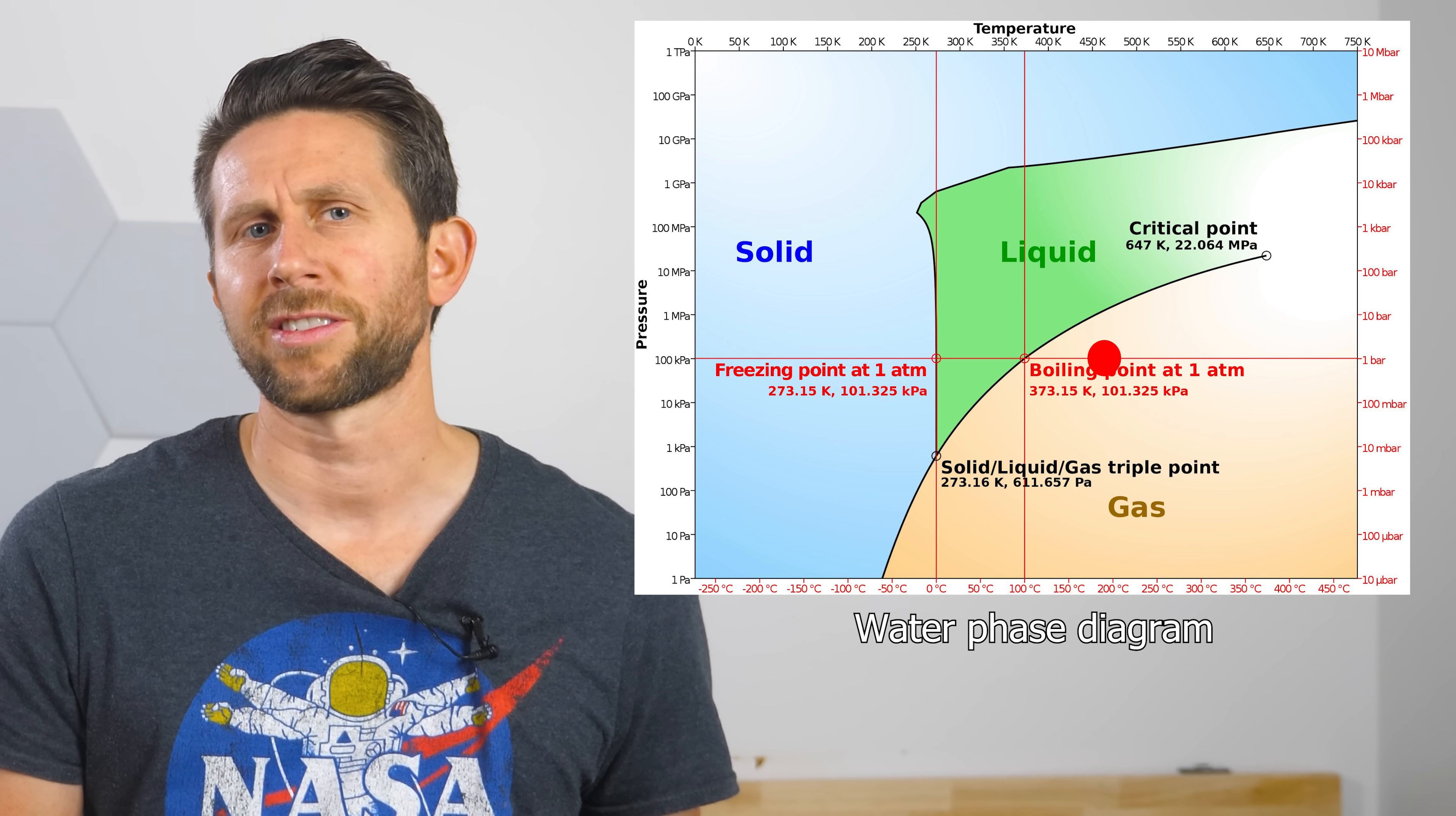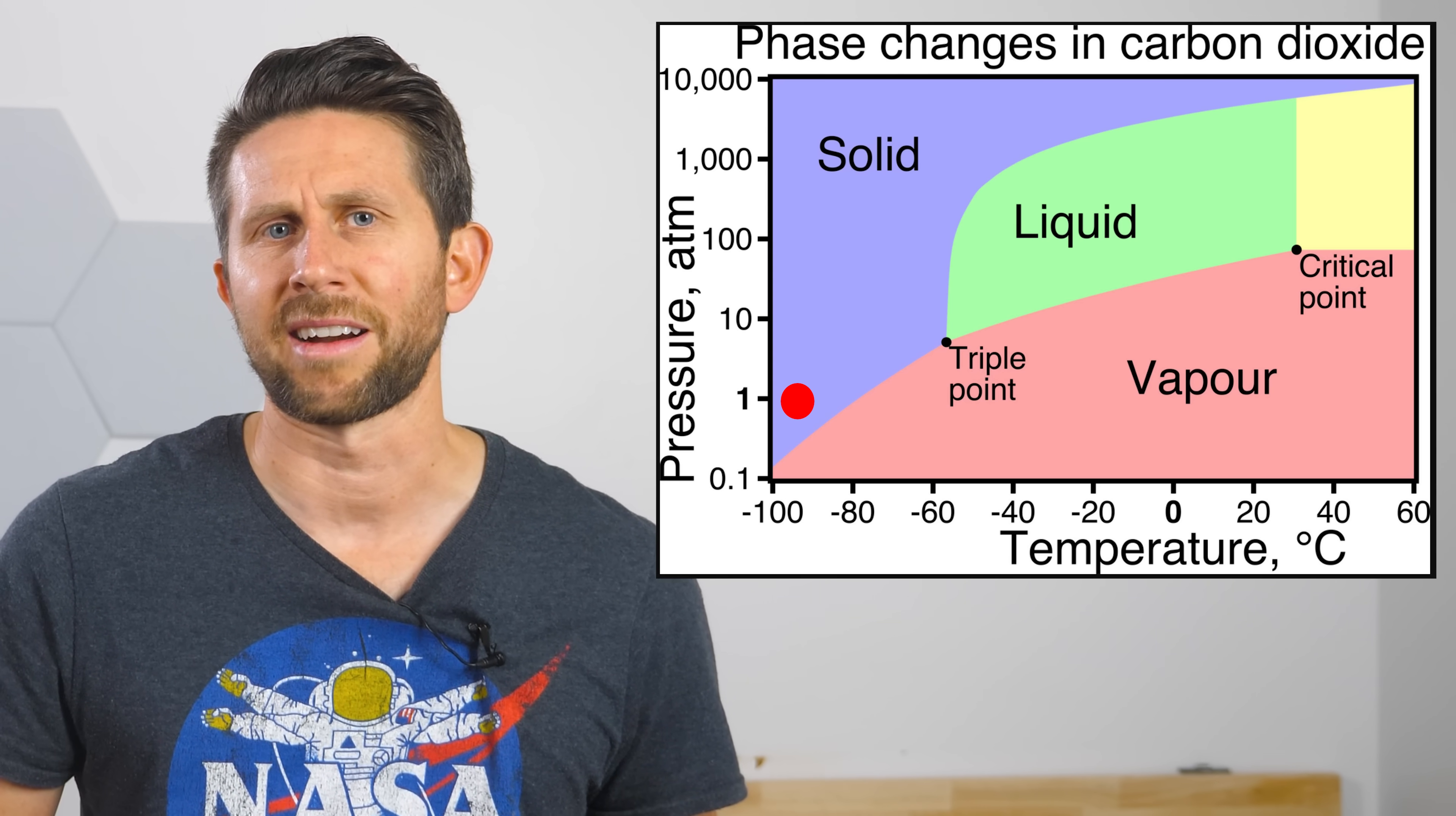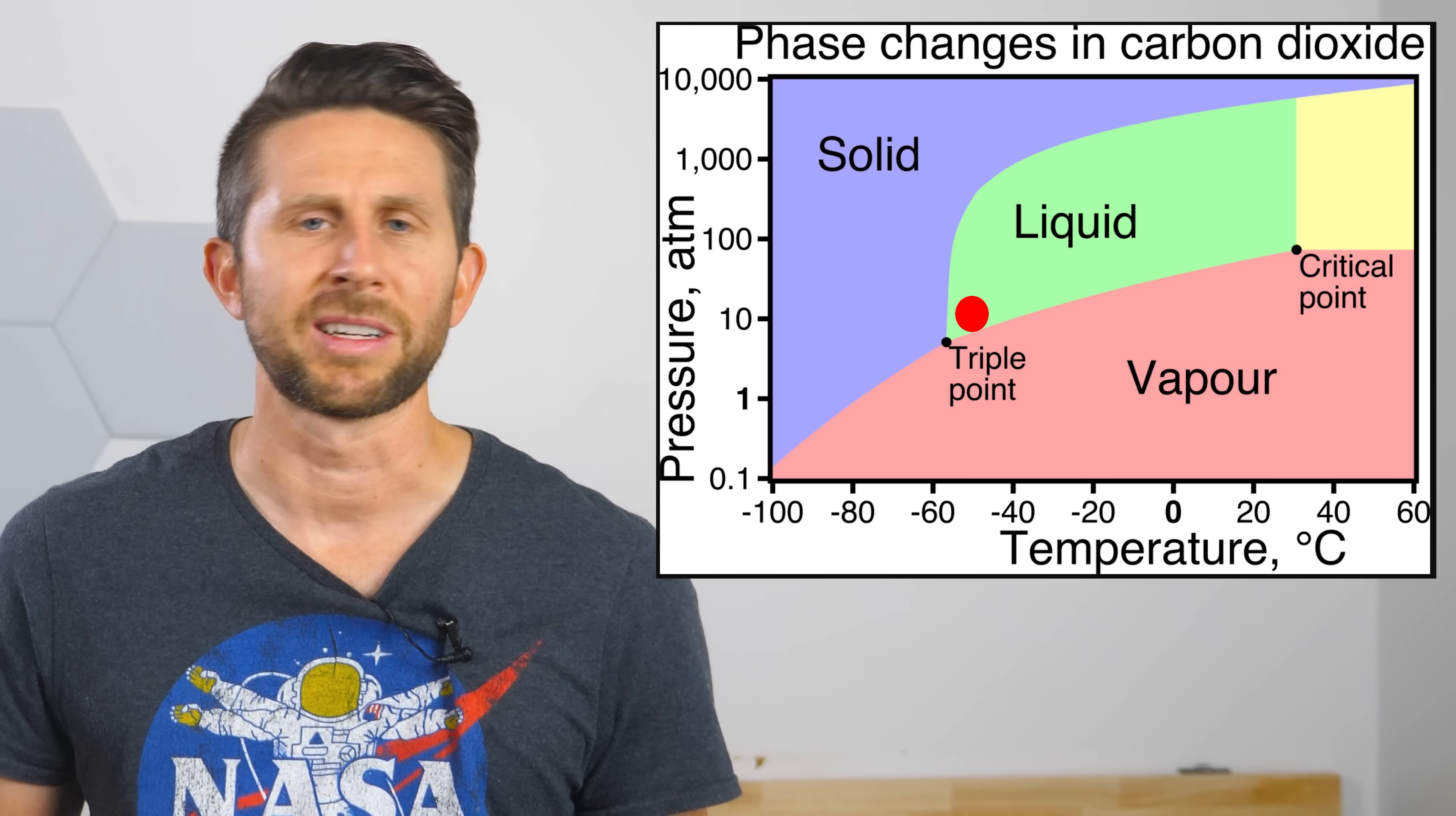But if we look at the CO2 phase diagram, we'll see that when you start with the solid CO2 at atmospheric pressure and then heat it up, it doesn't ever cross into the liquid area. It's too low on the diagram, meaning the pressure's too low. So that means if we just raise the pressure, then it will act like normal ice and melt into a liquid and then evaporate.